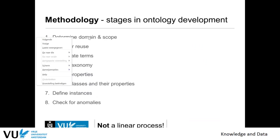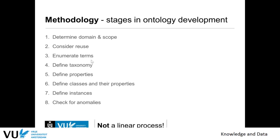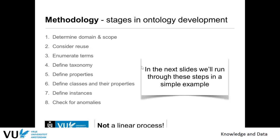To summarize, the steps are: determine domain and scope, consider reuse, enumerate the terms, create a class hierarchy (taxonomy), create the properties (semantic relationships between classes), define them in your OWL or RDFS file, then instantiate, check if it's correct by running the reasoner and checking for anomalies. This is not a linear process — if there are anomalies, you go back to a previous step. In the next slides, we'll have an example of creating an ontology to treat these steps in more detail.